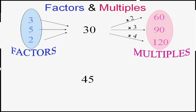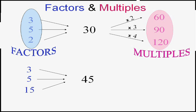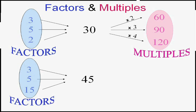Let's do it again for the number 45. 3 is a factor of 45 because it goes into it. 5 is a factor of 45. 15 is a factor of 45. Did you know 15 times 3 is 45? So these are some of the factors of 45.